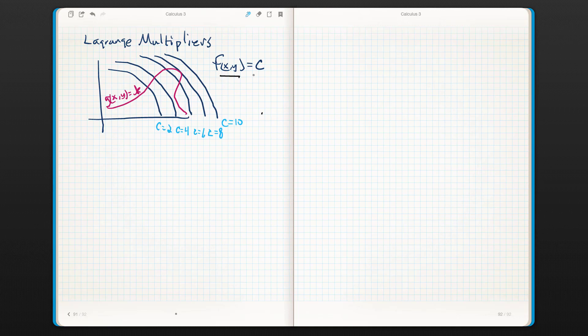Then I've got my function f of xy equals c, and these are level curves for f of xy equals c. The function is f of xy. We're taking the level curves at c equals 2, c equals 4, 6, 8, etc. Now here's my constraint function.